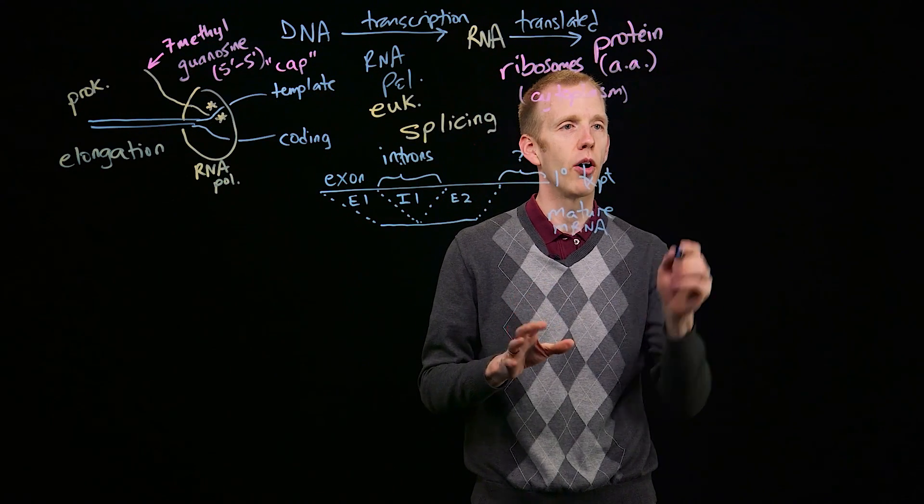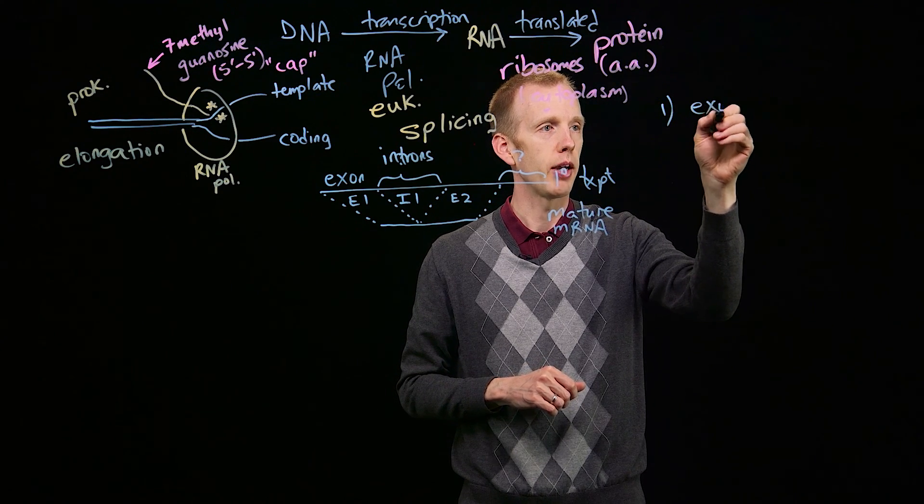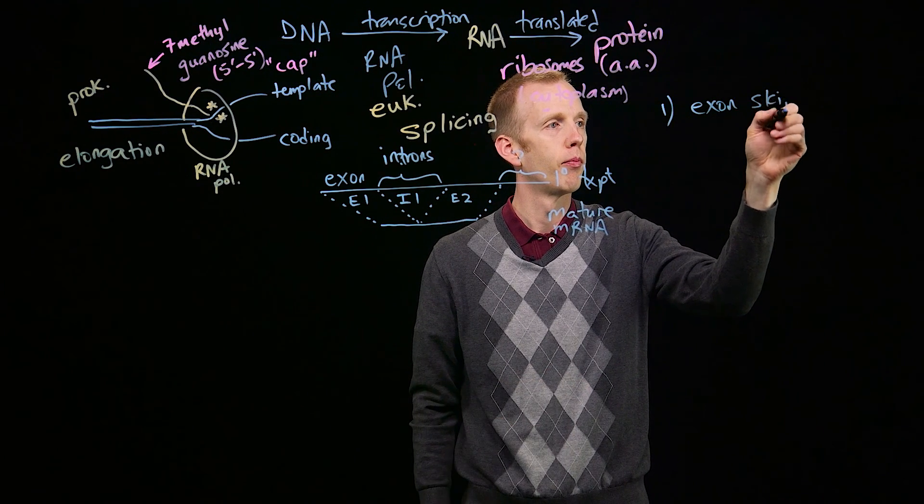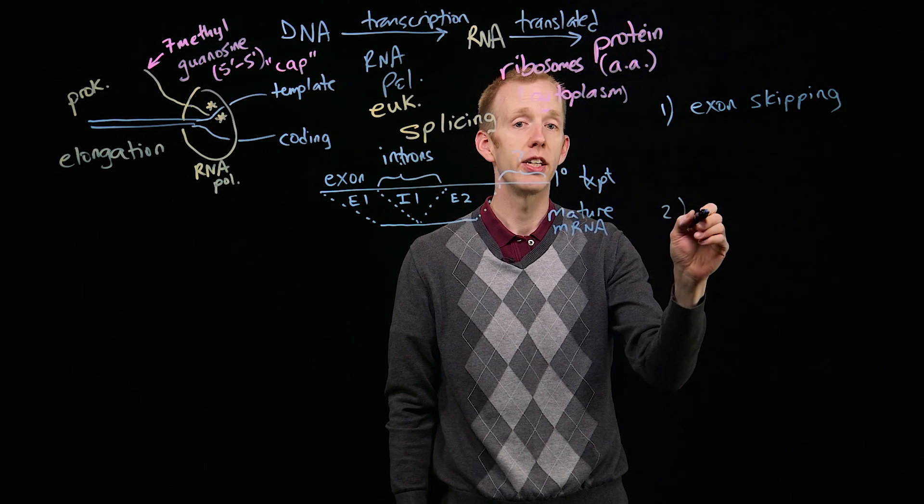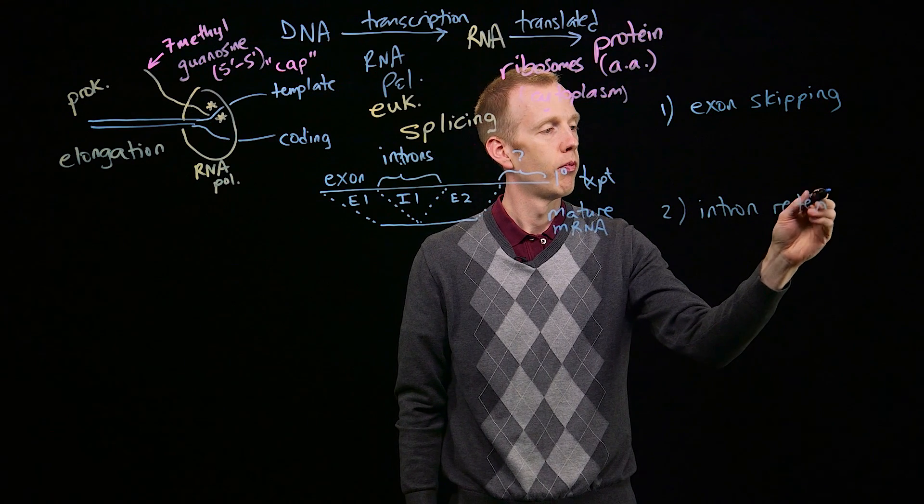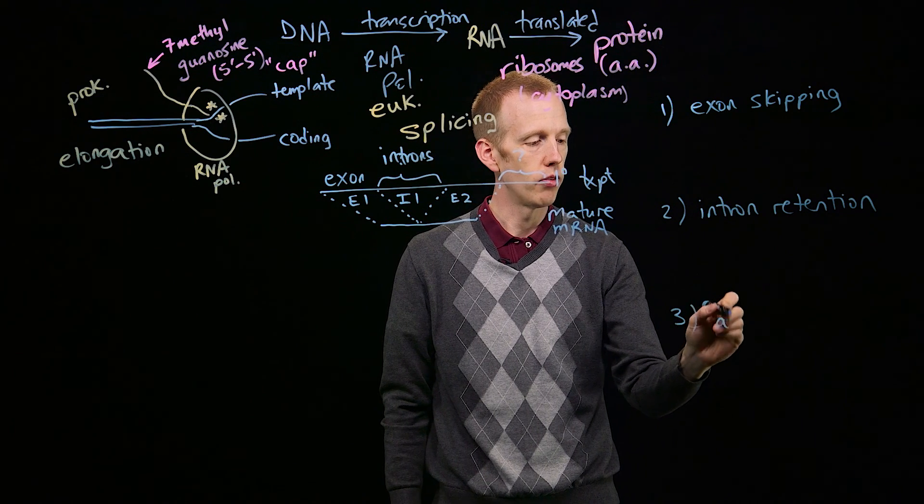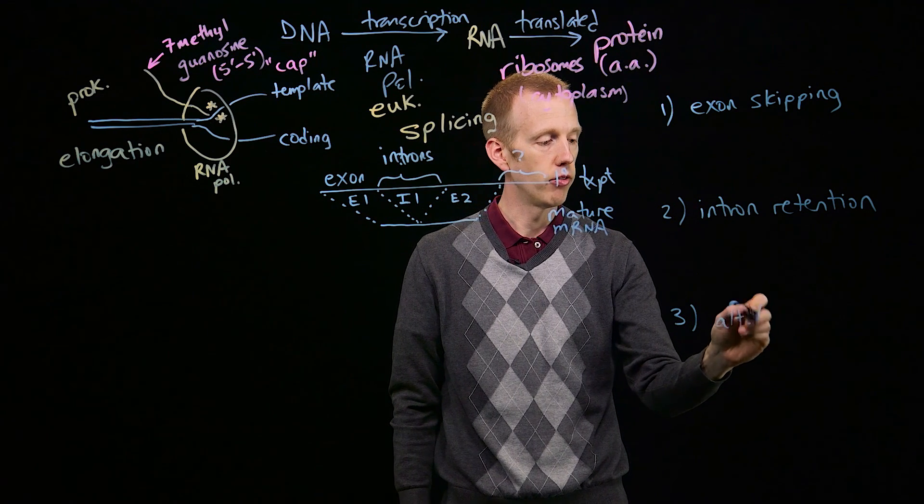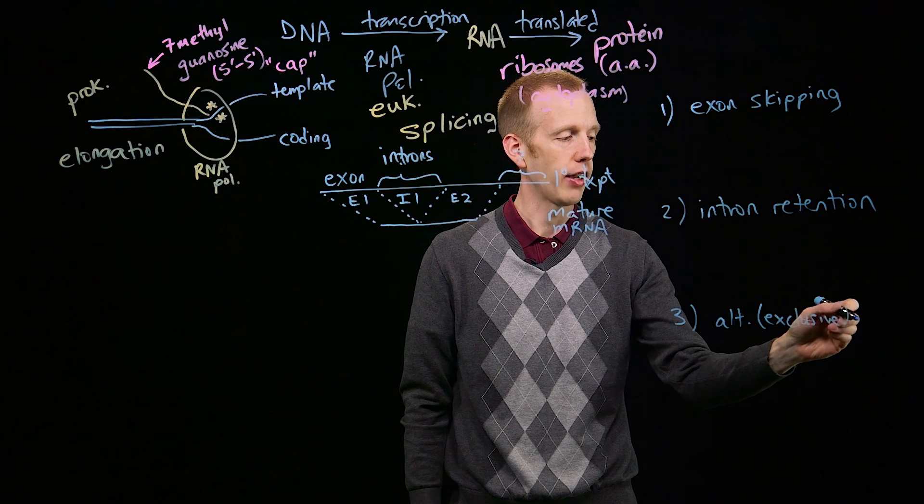I'm going to focus on three. One is called exon skipping. One is intron retention, and the third is the use of alternative or mutually exclusive exons.